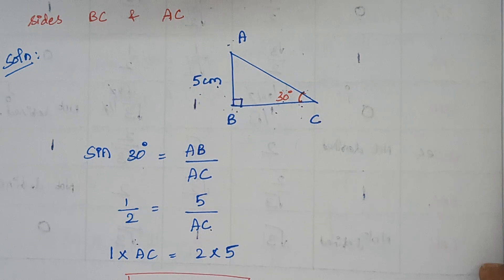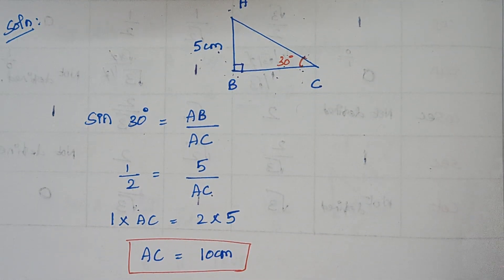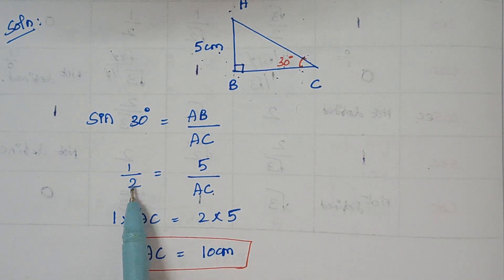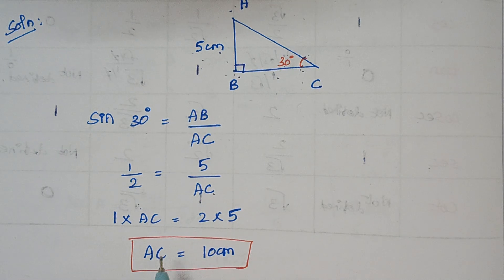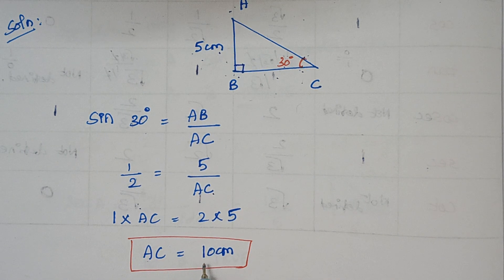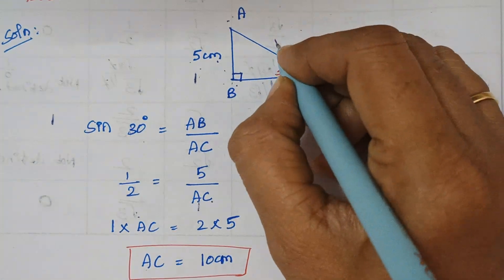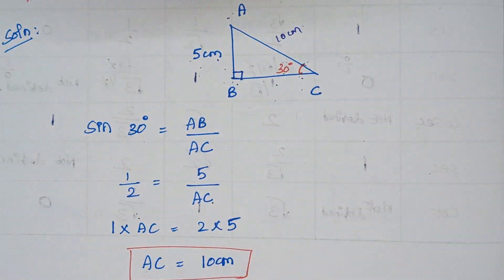Cross multiplying: 1 × AC = 2 × 5. Therefore AC equals 10 centimeters.